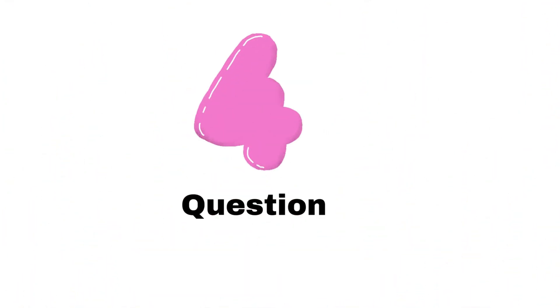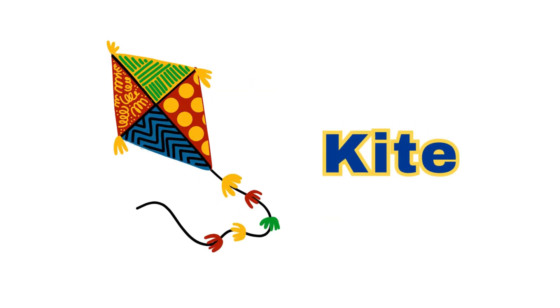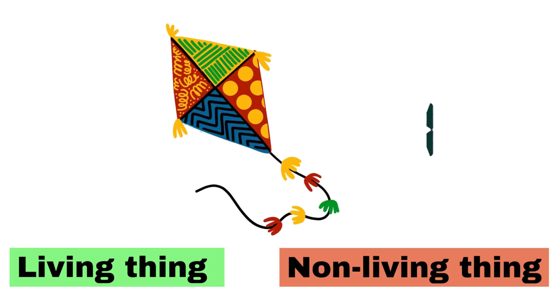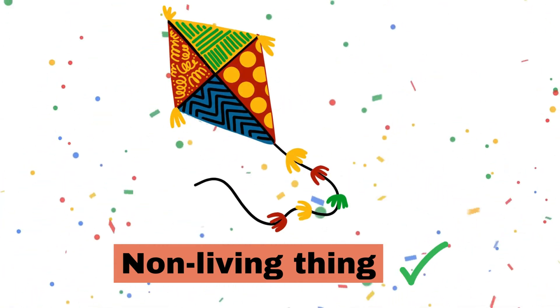Fourth question. What do you see here? Yes, it's a kite. Is this a living thing or non-living thing? Correct, it's a non-living thing.